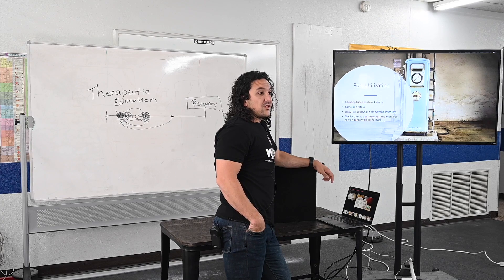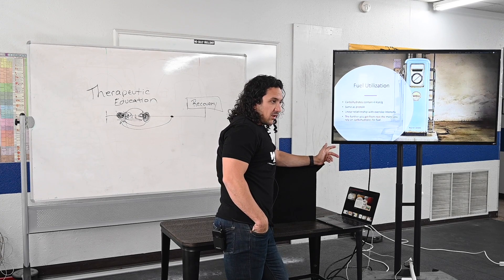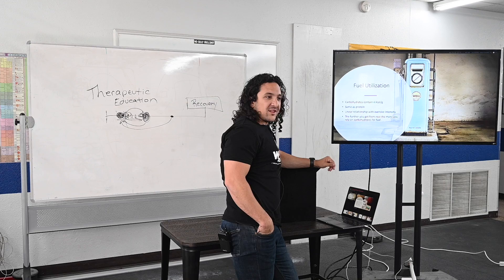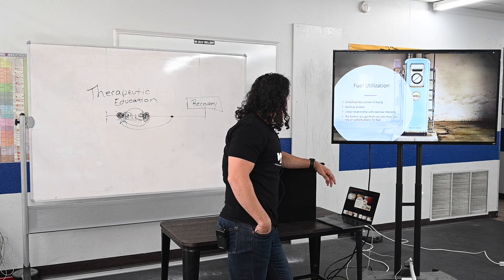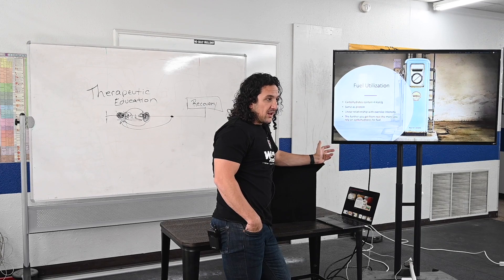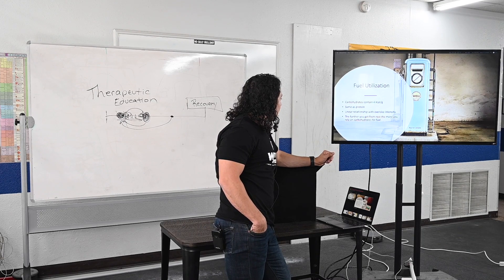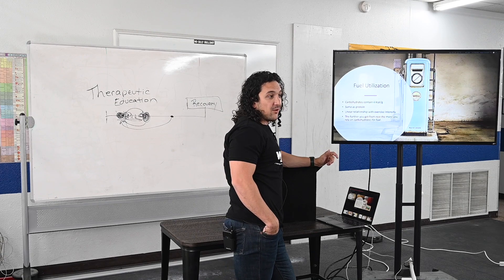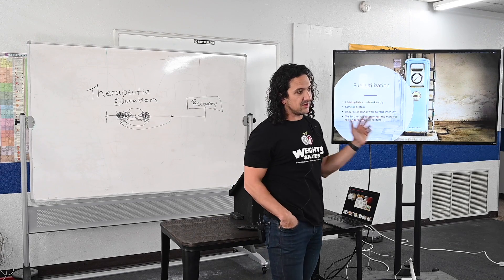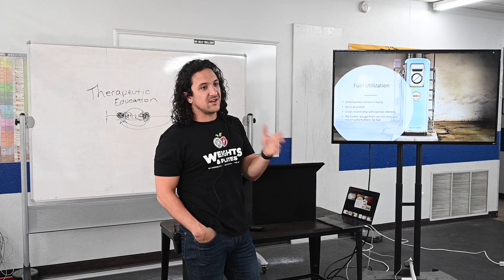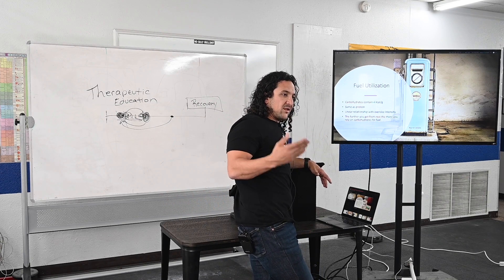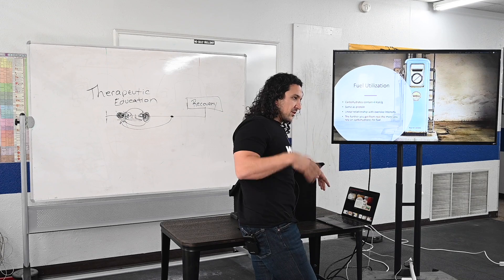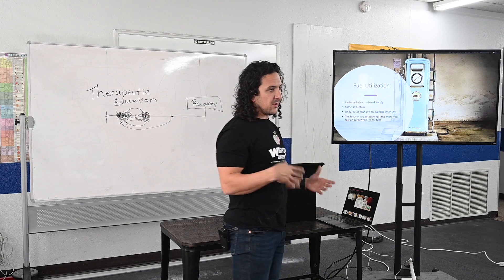Every gram of carbohydrate has four calories per gram — not that much compared to fat or alcohol. Same as protein, which also has four calories per gram. There's a linear relationship between carb utilization and the intensity of an activity. The harder something gets above rest, the more you're going to rely on carbs — as I was talking about with these marathoners.